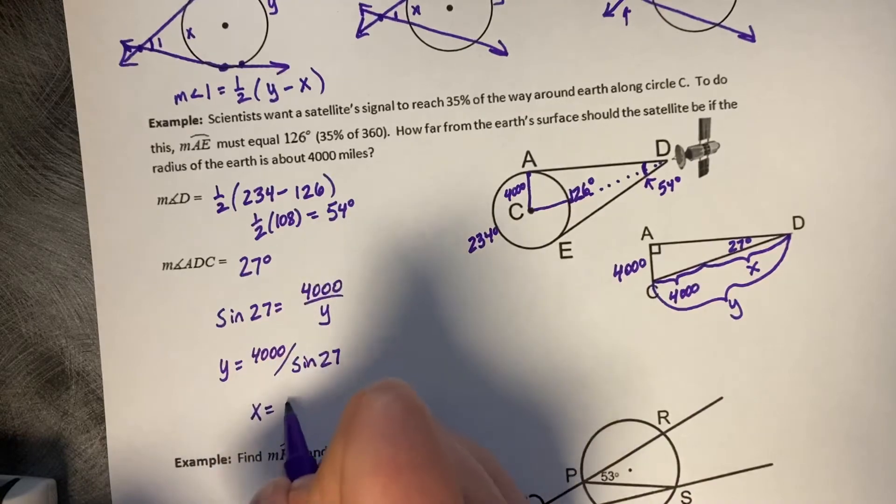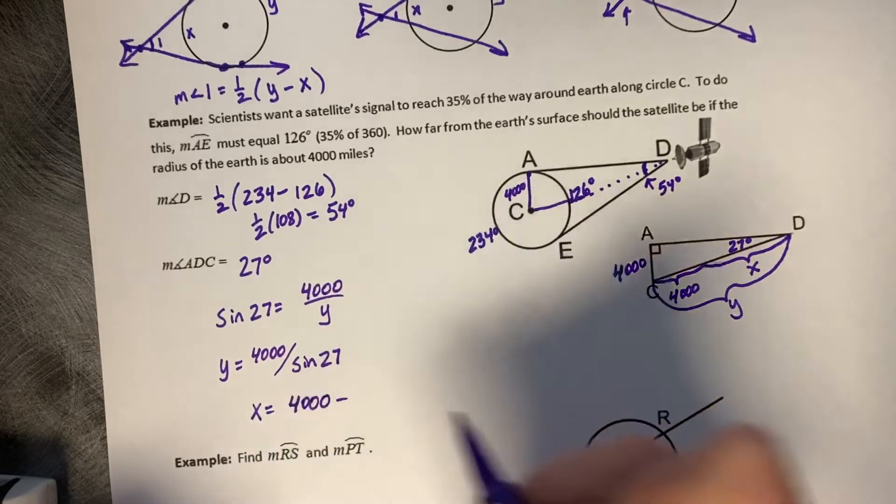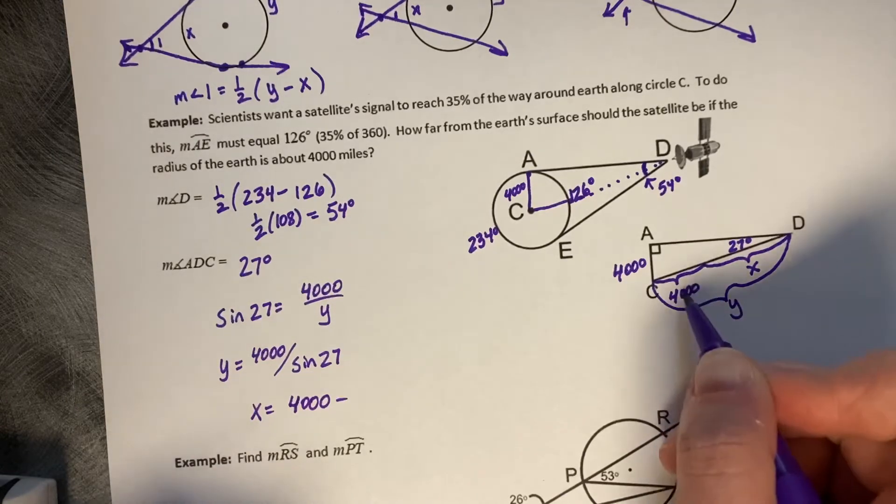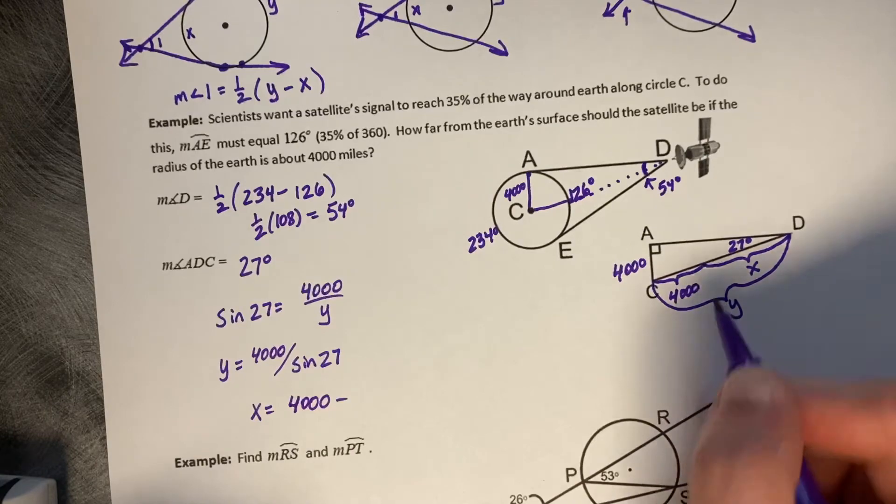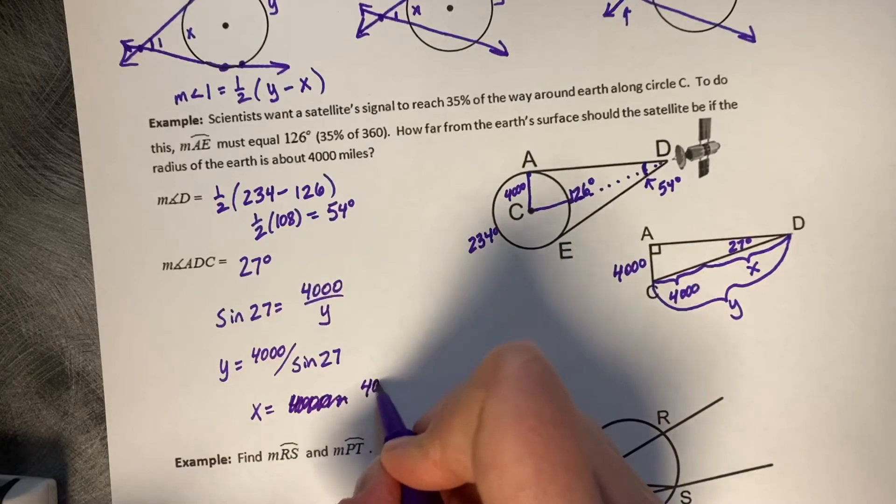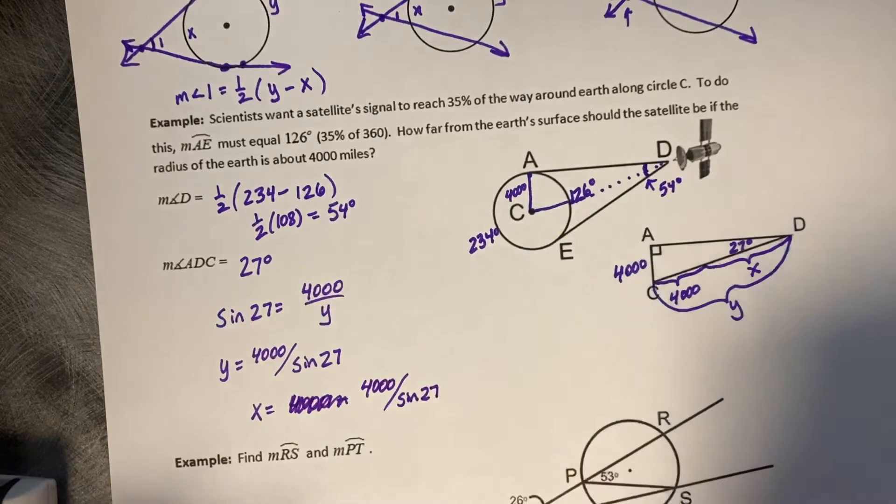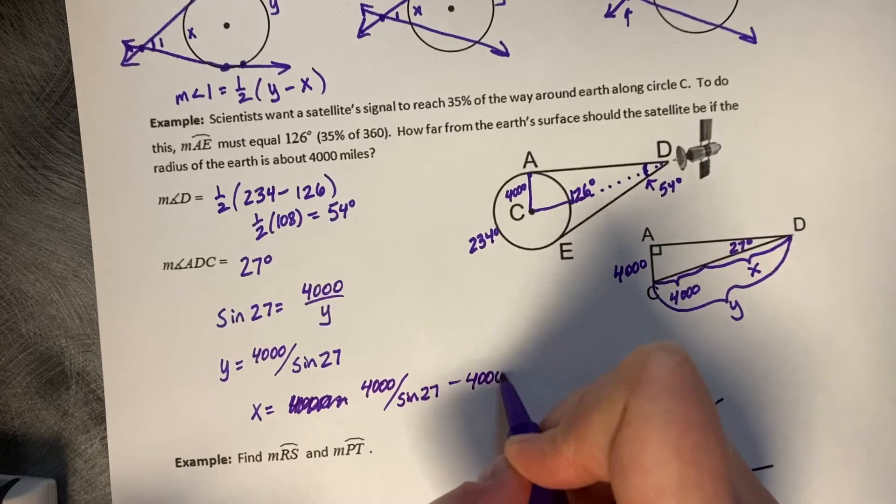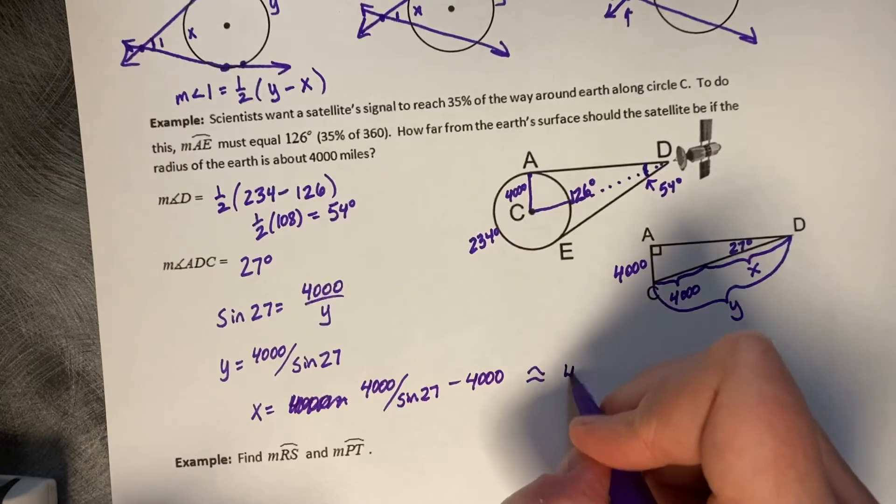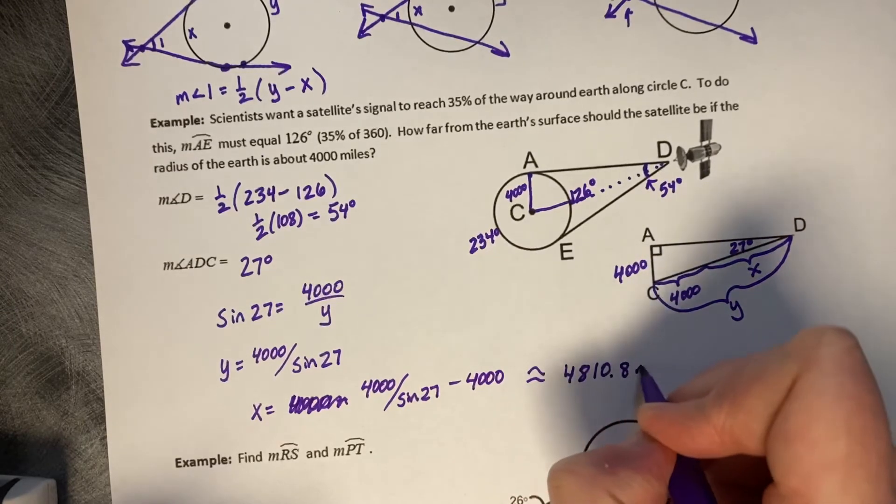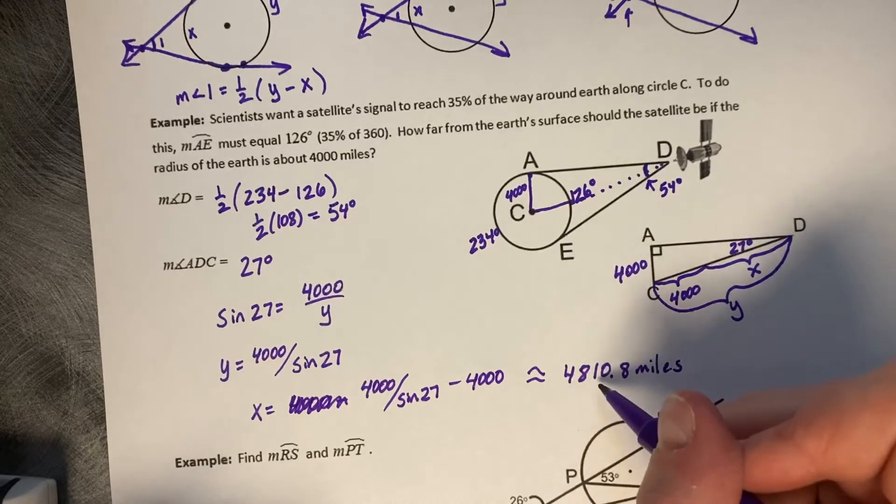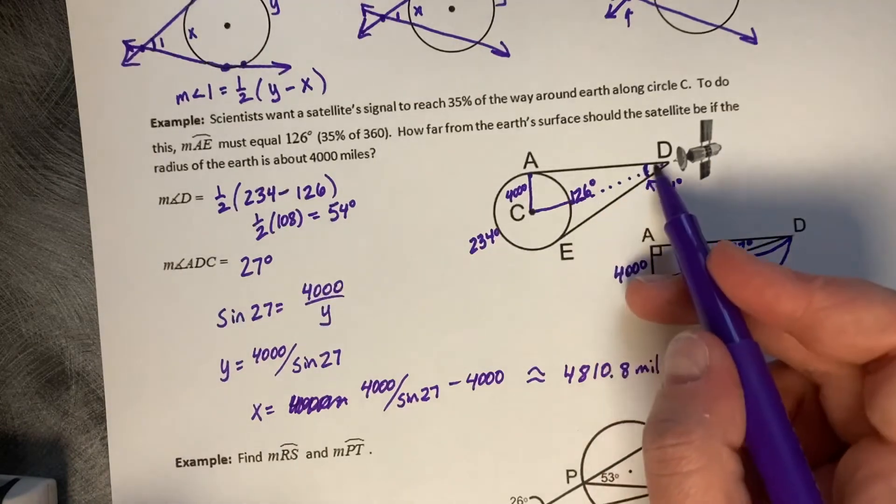And then if we want X, we're going to take this value, Y, and subtract off the 4,000. So, 4,000 divided by the sine of 27 minus 4,000. And then when you pop that into your calculator, you should get approximately 4,810.8 miles. So, this chunk is going to be 4,810.8 miles away from the surface of the Earth.